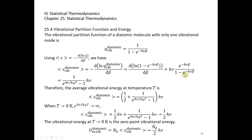This can be simplified by multiplying numerator and denominator by e to the power of positive h nu beta, giving h nu over e to the power of h nu over k_B T minus 1. This is the vibrational energy at temperature T relative to the zero-point energy. Together, the average vibrational energy at temperature T is one-half h nu plus h nu over e to the power of h nu over k_B T minus 1. When temperature approaches zero, the exponential term approaches infinity and the second term vanishes, so the average vibrational energy approaches one-half h nu.